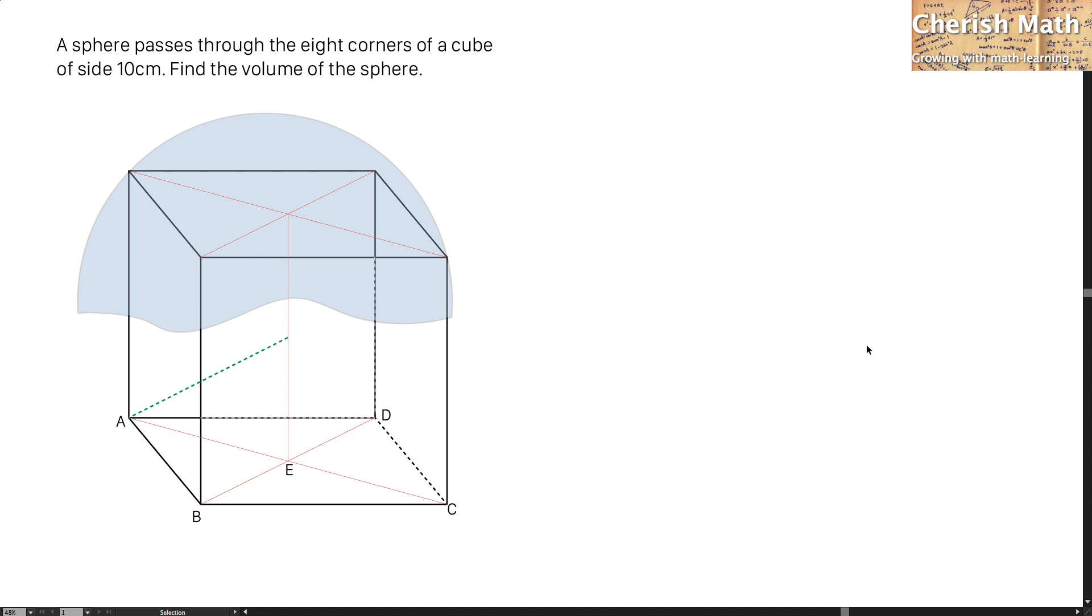When the sphere passes through the eight corners of a cube, what will happen is the center of the cube is the same as the center of this sphere. I am labeling the center here with letter O. The side length of this cube is given as 10 cm.